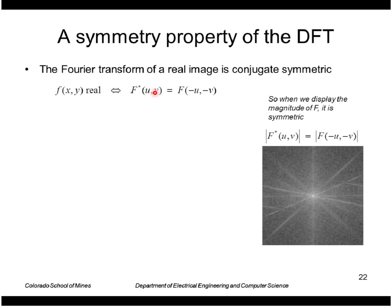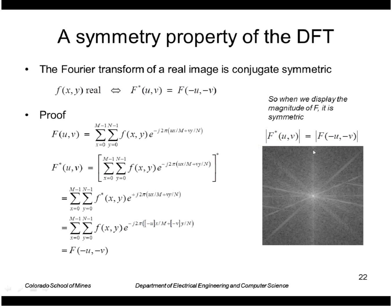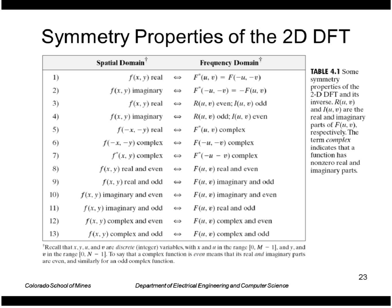So this is the complex conjugate of f at u, v, that's equal to f at minus u, minus v. So, of course, when you take the absolute value, they're equal. And this is the proof of that. This shows a complete table of these symmetry properties. The one we just looked at was right here.